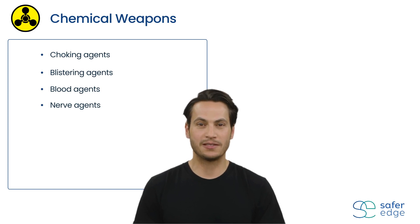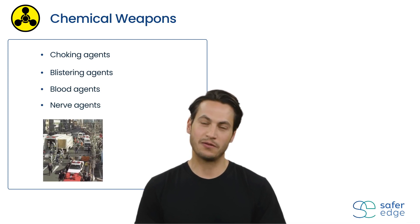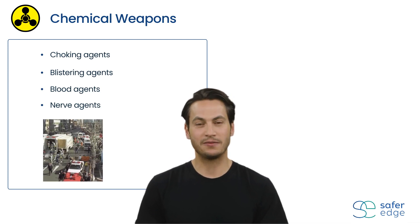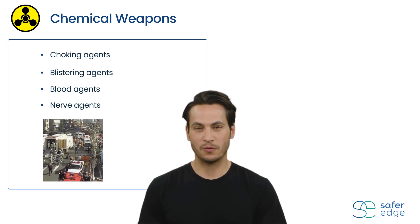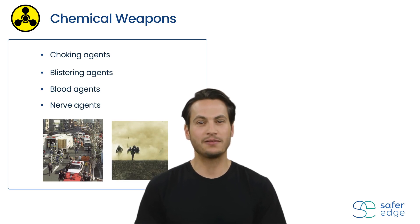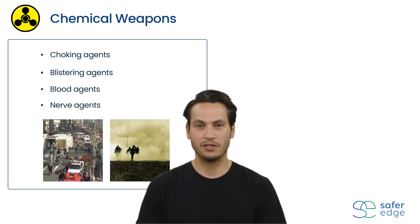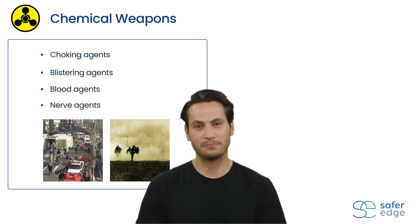Well-known chemical weapons include sarin, a nerve agent that was used in an attack in the Tokyo subway in 1995, and mustard gas, a blistering agent used widely in World War One.